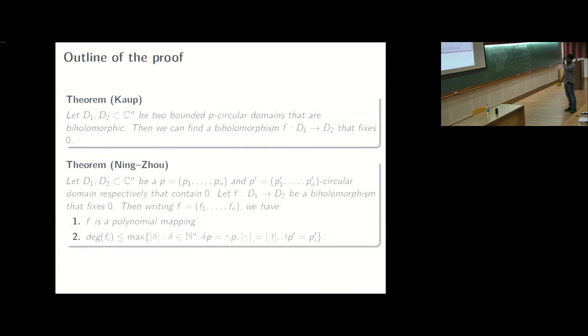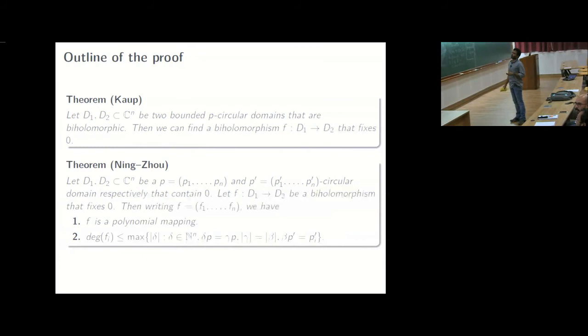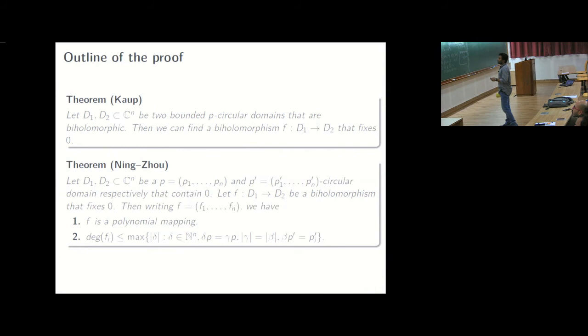And then in a 2017 work, Ning and Zhu proved that if there are say two, one p circular domain and a p prime circular domain, and suppose f is a biholomorphism which fixes the origin, then they are necessarily a polynomial mapping and we also know a bound on the degree of each of the components, which is given by this formula here.